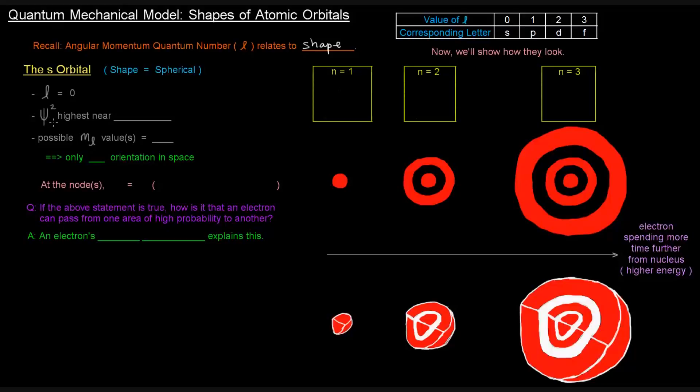The probability density is highest near the nucleus because it is a sphere, where the sphere center is the nucleus. So the possible M sub L values, if we think about the L value, is just zero, which means that there's only one orientation in space.